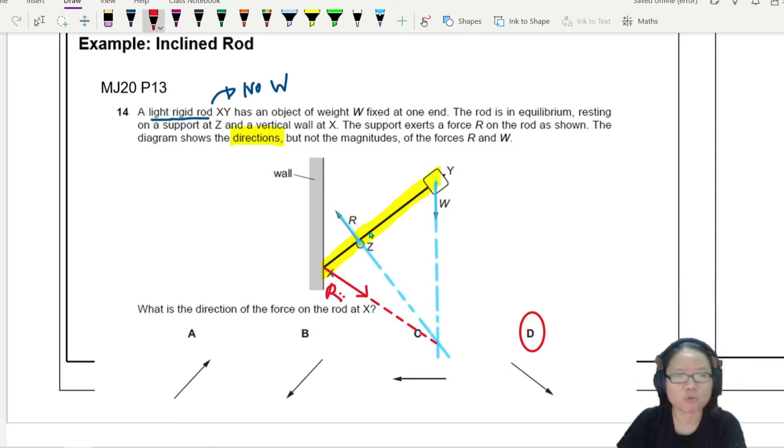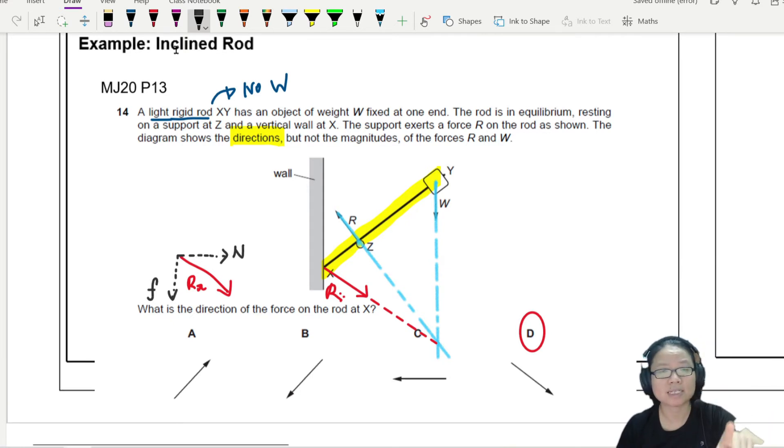This R force could be pointing up or pointing down - we don't know. But the whole point is that there is a component that is the normal force. It is the friction that changes direction. This R can change direction. Sometimes your friction will be downwards like this because maybe this W is very strong and this rod is about to slide up, so the friction must be acting downwards. Friction acting down because the rod is about to slide up.